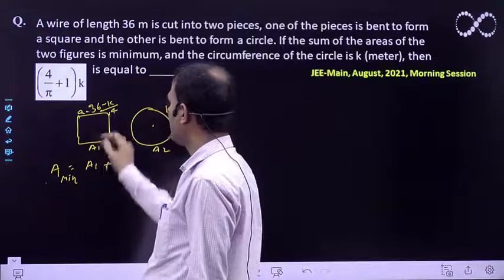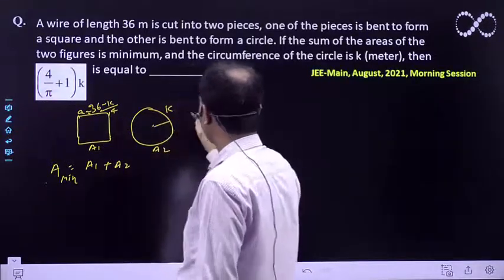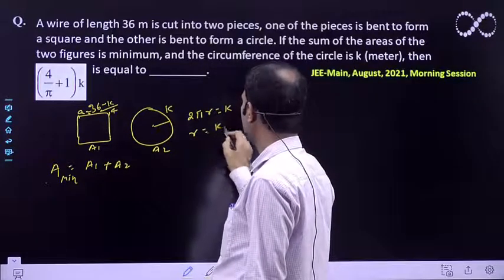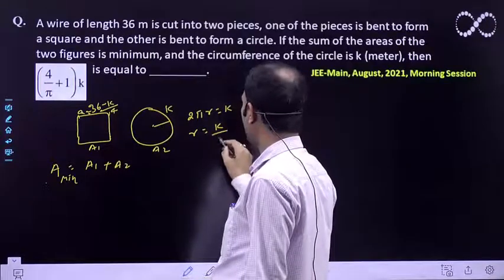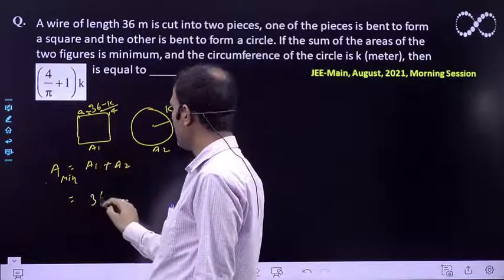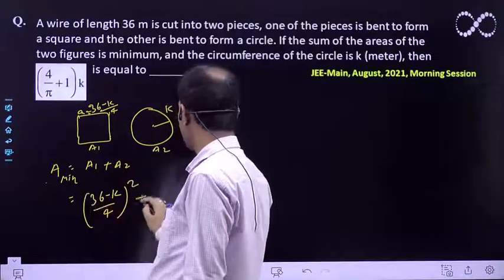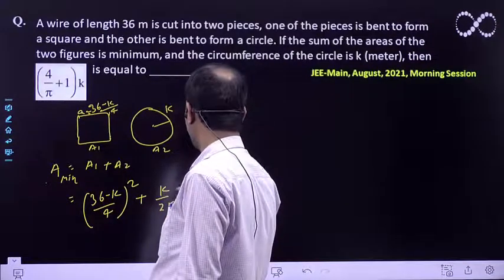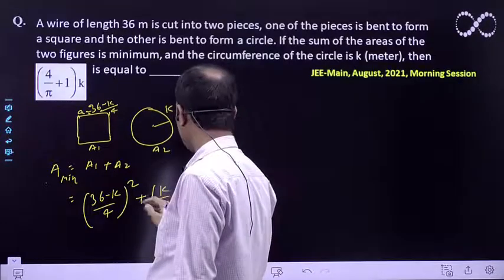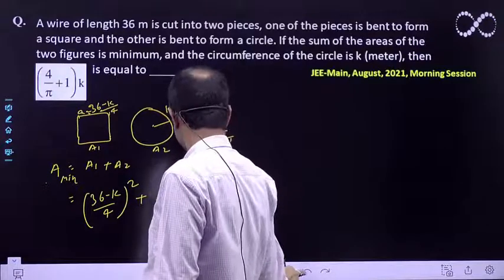This is the side of the square. From 2πr = k, the value of r is k/2π. The area we get is the area of the square: (36-k)/4 squared, plus the area πr² which is π(k/2π)².